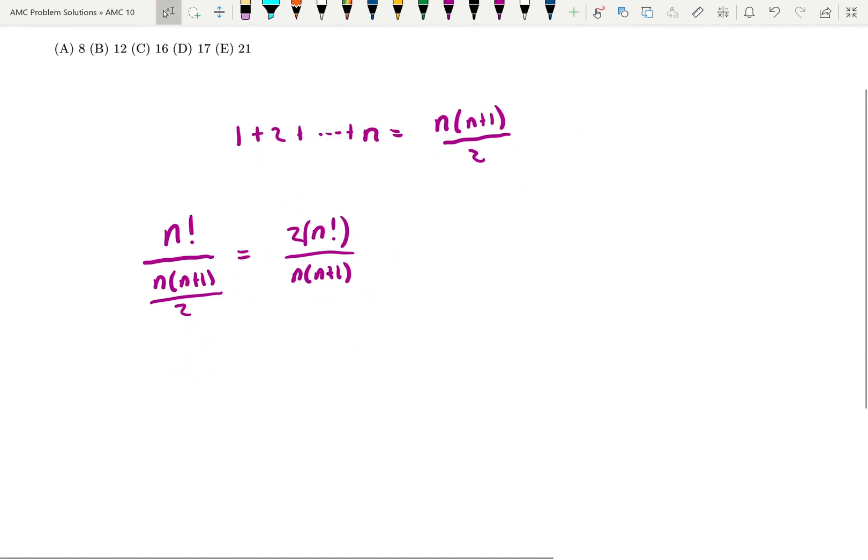So let's look at some different cases, two cases actually. So what about when n is odd? We can start this out. So let's say just n is 1. So 2 times 1 factorial over 1 times 2. Yep, that works. That's evenly divisible.